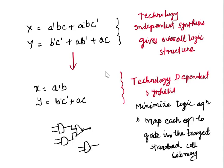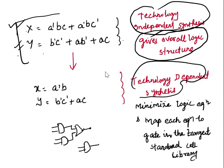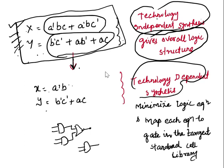For technology-independent synthesis, if I write x = some boolean expression and y = another expression, it gives me the overall logic structure — the RTL-level circuit. For technology-dependent synthesis, it will further optimize: for example, a_bar·b·c + a·b·c_bar reduces to a simplified expression, and y is minimized as well. Technology-dependent synthesis minimizes the logic equations and maps each to the target standard cell library.